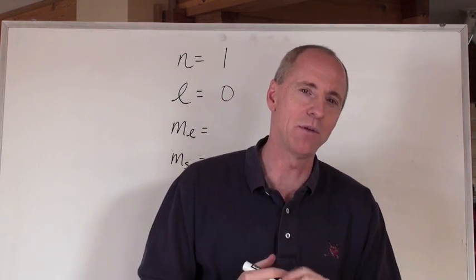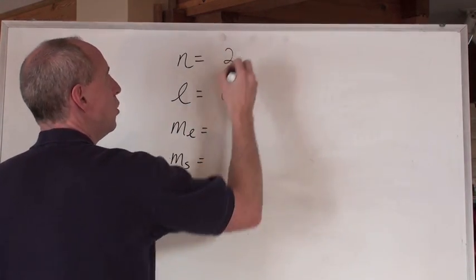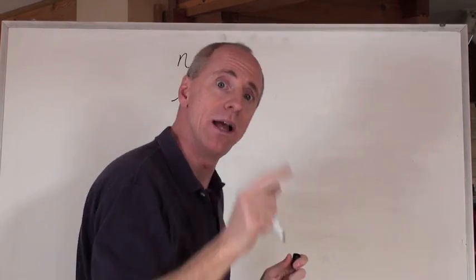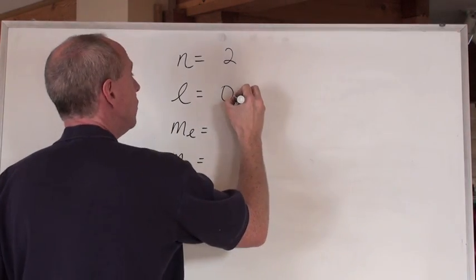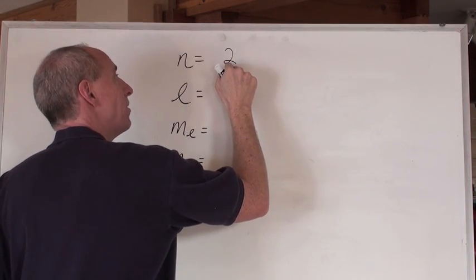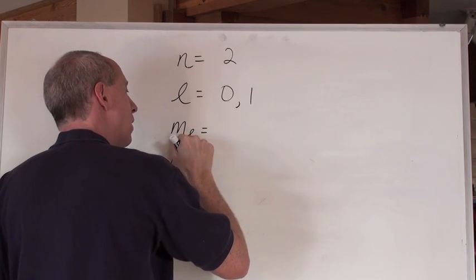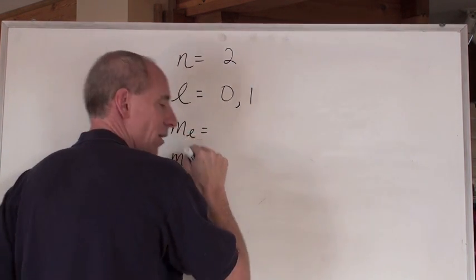Now, what that means is this. Stay with me. Let's pretend that n equals not one, but two. So, what does that mean that L can equal? L can equal zero and one. You can go up to one less than two, which is one here, so zero and one. What can your ML equal?